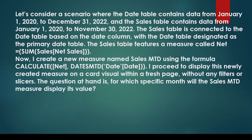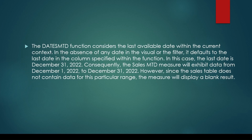To summarize: the DATESMTD function considers the last available date in the current context. In the absence of any date in the visual or filter, it defaults to the last date in the column specified within the function. In this case, the last date is December 31st, 2022. As a result, the Sales MTD measure will reflect data from the 1st of December to the 31st of December. However, since the sales table does not contain data for this date range, the measure will display a blank result.